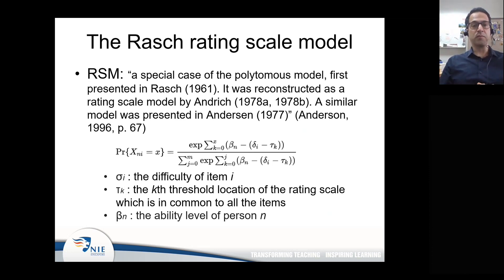A little bit of background about the Rasch rating scale model. According to Anderson 1996, this model is a special case of the polytomous model, which was first presented in Rasch in 1961. It was reconstructed as a rating scale model by David Andrich. A similar model was also presented by Anderson himself in 1977. Here is the mathematical representation of the Rasch rating scale model presented by David Andrich. As you see, there are three parameters in both denominator and numerator of this model. The probability of a person with a certain ability level to answer an item with a difficulty level is governed by those two parameters plus the tau parameter or the kth threshold location of the rating scale, which is in common to all the items.